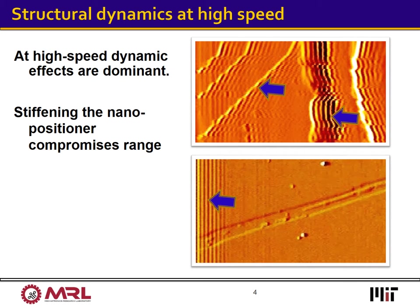But why can't we just move faster? At high speeds, dynamic effects become dominant. On the right you can see two microscopy images captured at speeds that are just slightly above the nanopositioner capability. The artifacts that appear in these images are caused by the vibrations induced in the nanopositioner at high speed. By driving the positioner even faster, these effects will completely dominate captured images, and may also damage the probe or the sample.